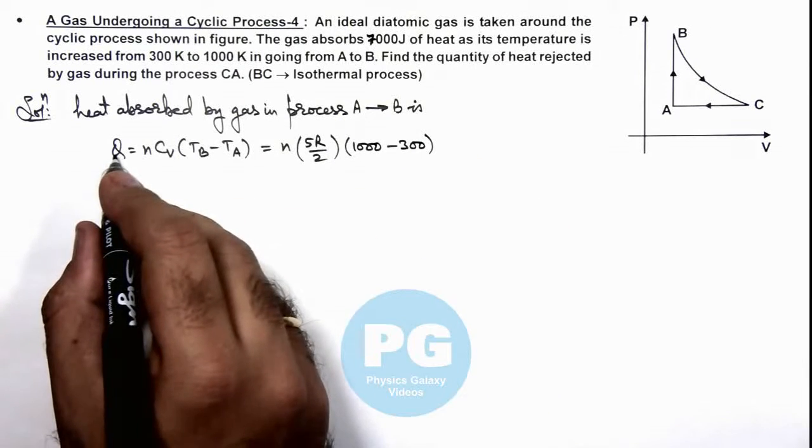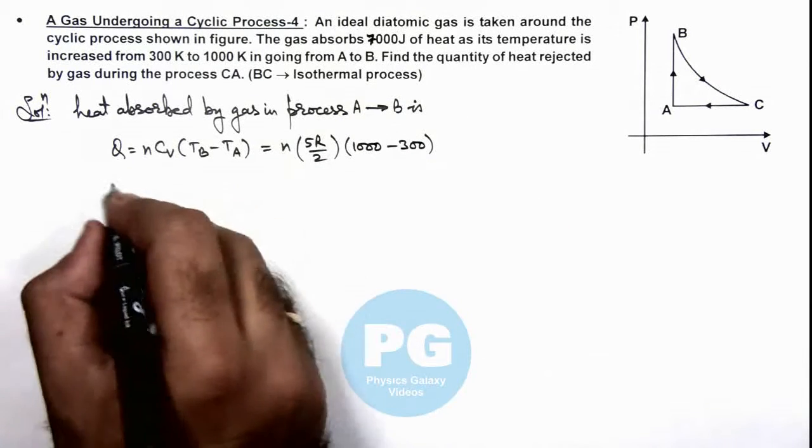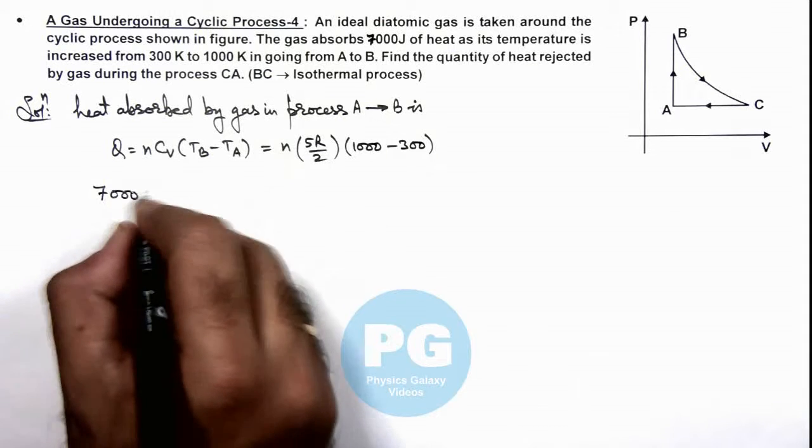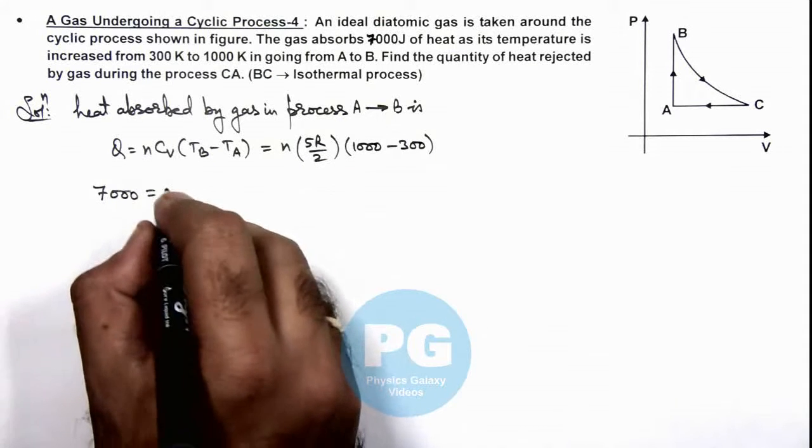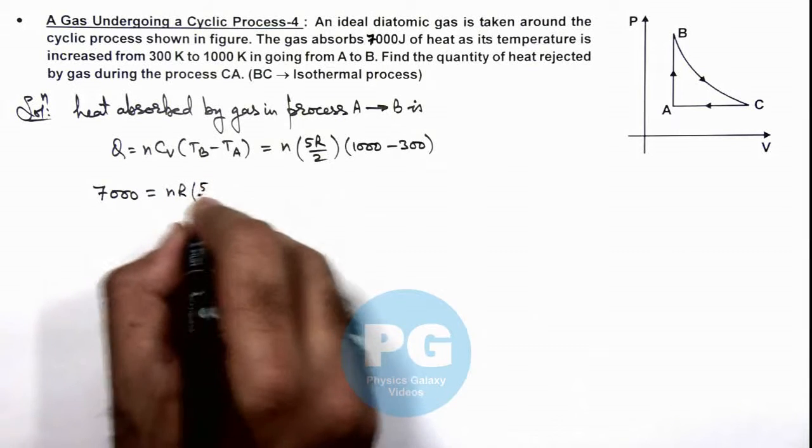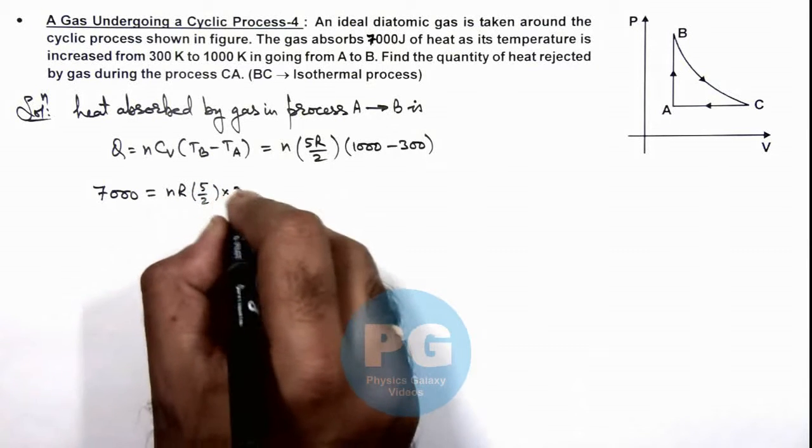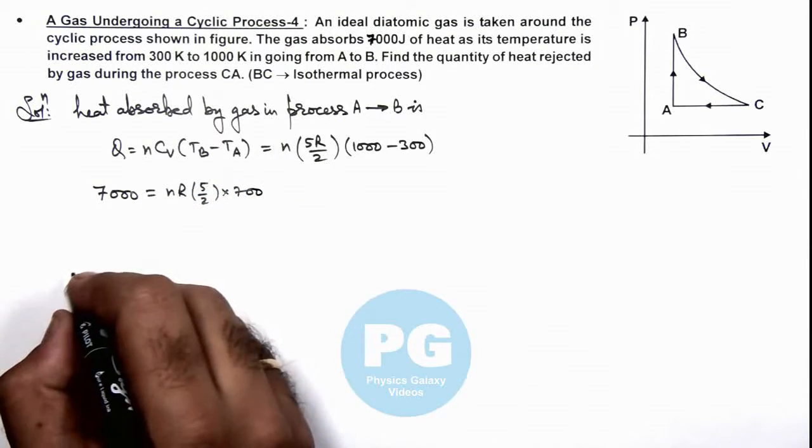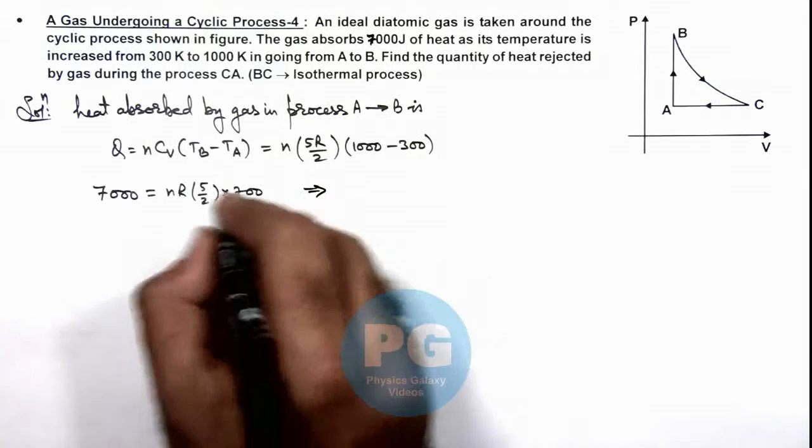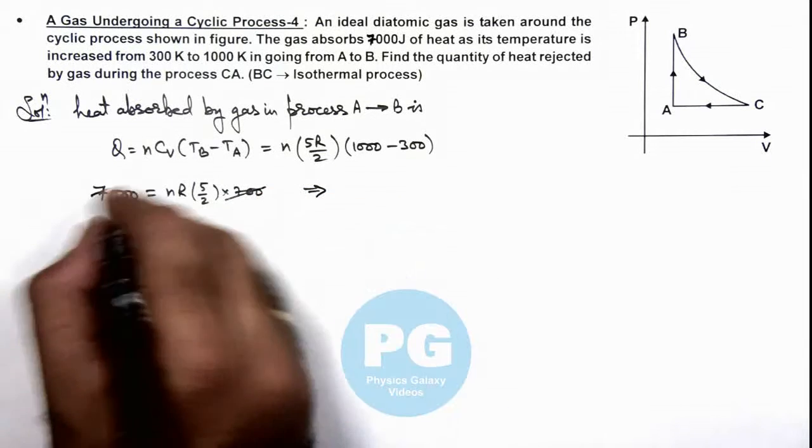And the value of heat is 7000 joules, so this can be written as 7000 equals nR multiplied by 5/2 multiplied by 700.